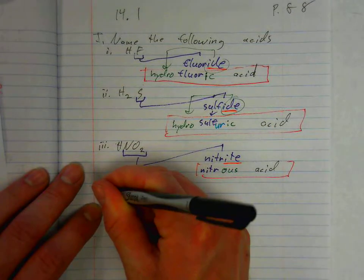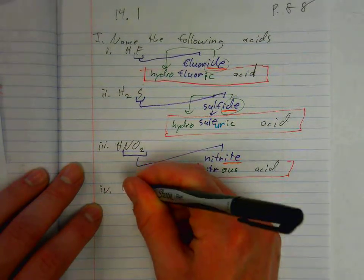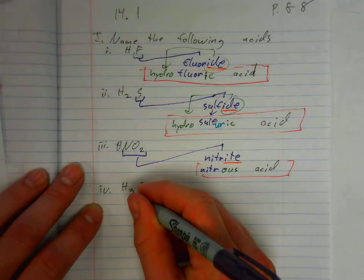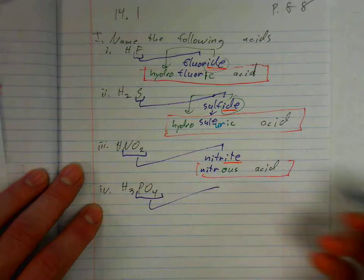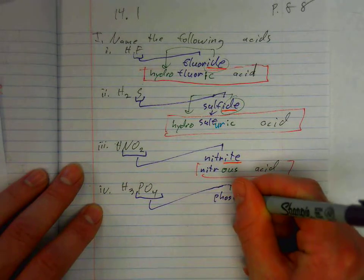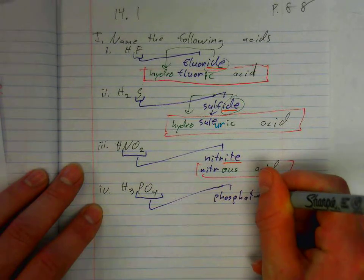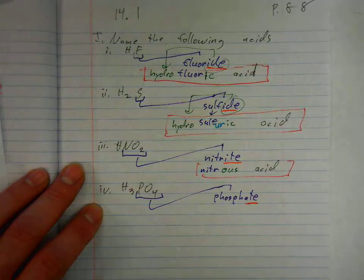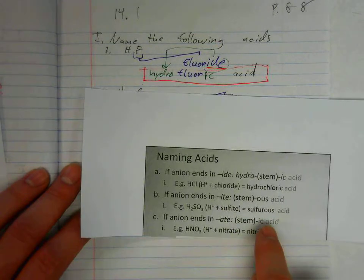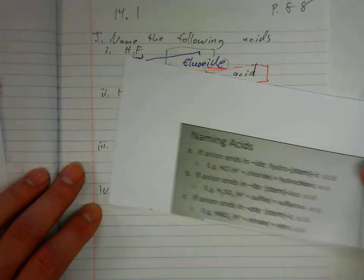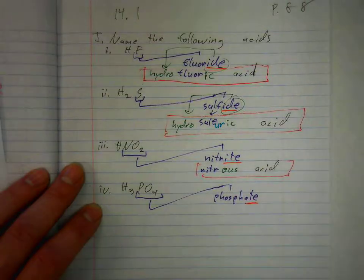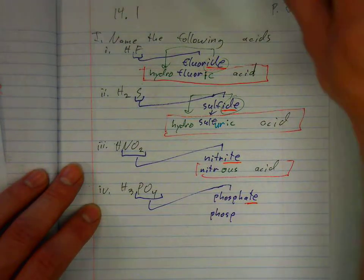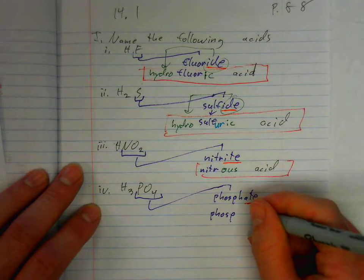How about H3PO4, polyatomic ion PO4 3-. The ending, or suffix, is ATE. The rule is, if it ends with ATE, it's stem, ic, and acid. So we have phos and ic and acid.